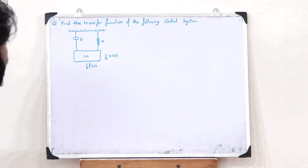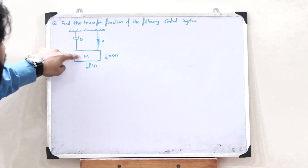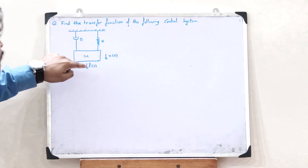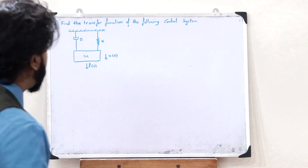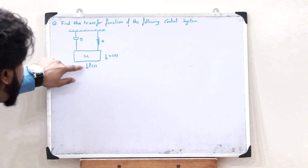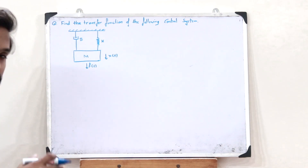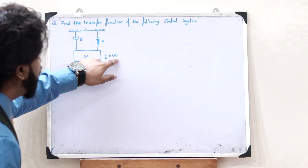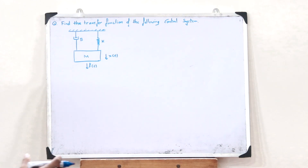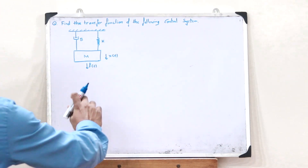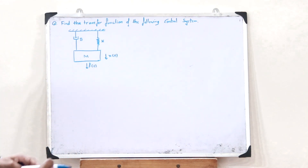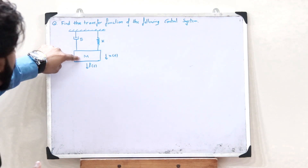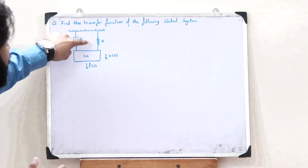Here, we are given a particular system. What we observe is that it has got three components: a particular mass M, a particular dashpot or damper of damping constant B, and a particular spring of spring constant K. In this particular control system, a particular force is applied in the downward direction. When we apply that force, it undergoes a particular displacement X of T. The main concept to be used is that this external force we apply is equal to the sum of the restoring forces developed in the mass, the dashpot, and the spring.